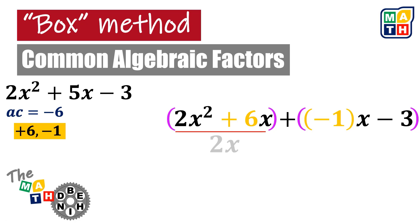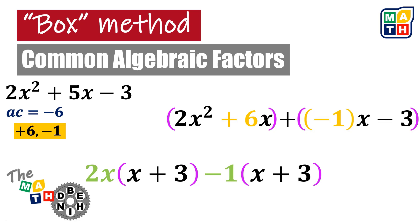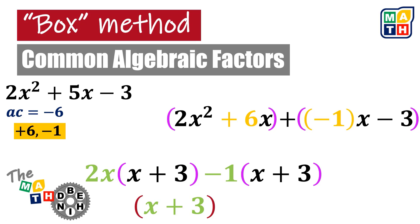Here, we simply take the common factors for each pair. For the first pair, the common monomial factor is 2x. Taking it out gives us 2x times the quantity (x plus 3). Following the same process for the second term, the common monomial factor is negative 1. When it is factored out, the remaining binomial is (x plus 3). We notice that we have a common binomial expression per group of terms, which gives us the product (x plus 3) and (2x minus 1).